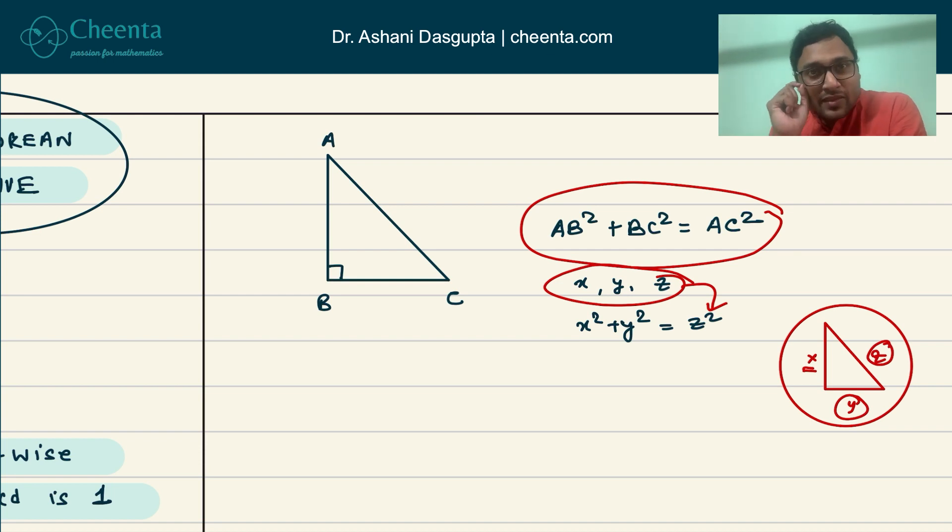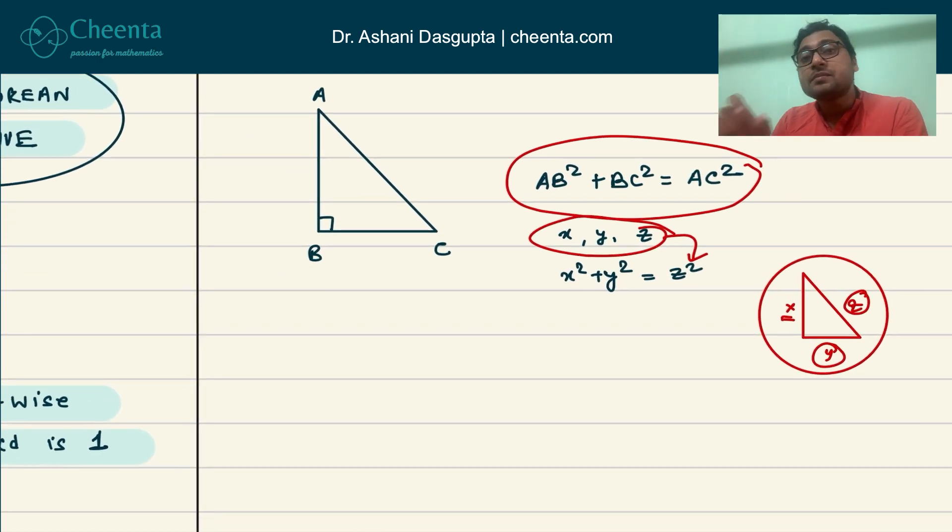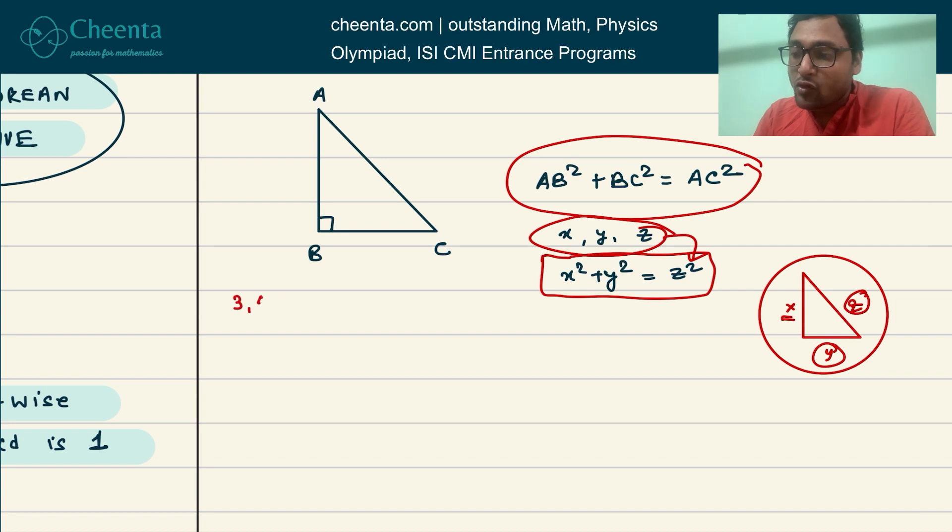Now that we have that cleared out, let's talk about Pythagorean triples. Pythagorean triples are simply three numbers which satisfy this equation. For example, 3, 4, and 5 is a Pythagorean triple because 3² + 4² = 5². You can check it out.